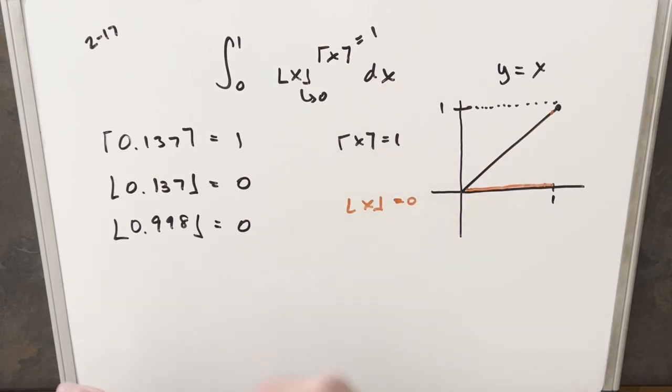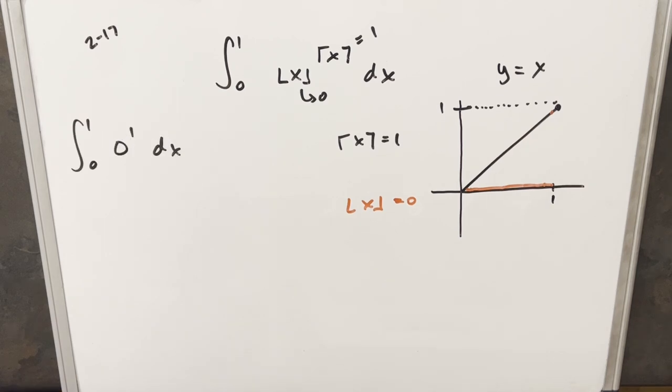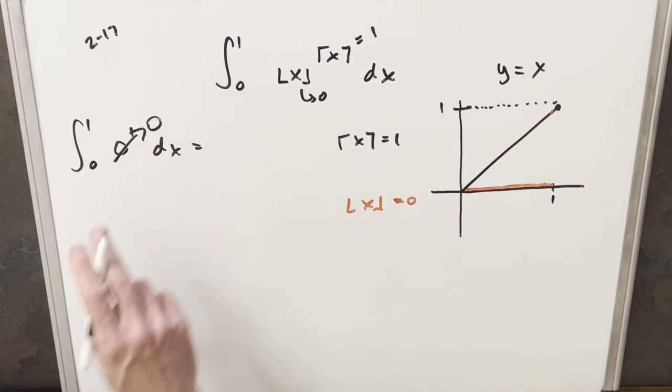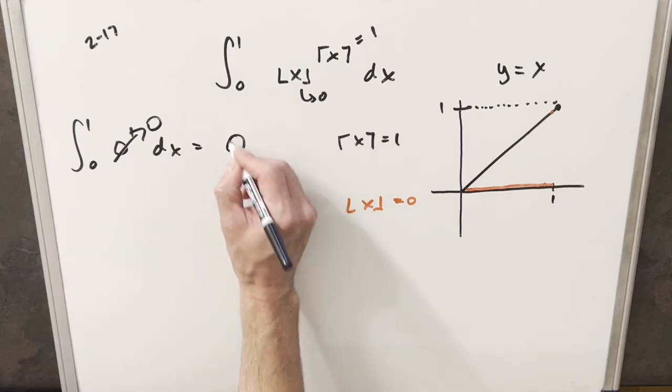Now we're just integrating 0 to the 1st power, but 0 to the 1 is just 0. The integral of 0 is just 0.